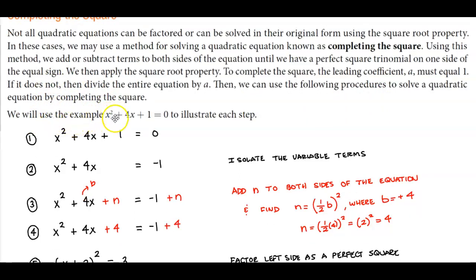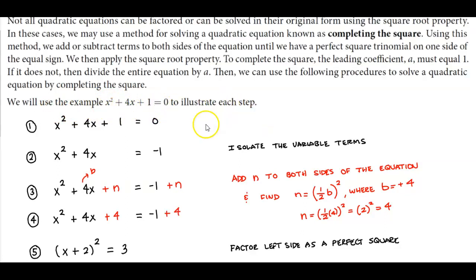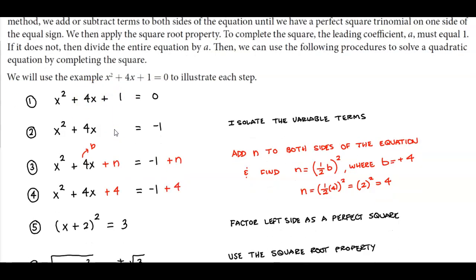We will use the example x² + 4x + 1 = 0 to illustrate each step. Now if you take a look at x² + 4x + 1 = 0, if we try to factor this it's not going to work because we don't have a number that when we multiply to get 1 and we add them together gets 4. There aren't any numbers that we can do that. So therefore we're going to complete the square.